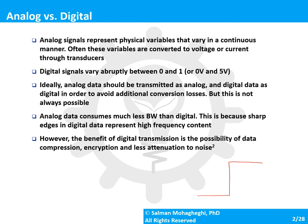In an ideal world, you would want to transmit analog signals through analog transmission systems and digital signals through digital transmission systems, because every time you convert a signal from one form to another there will be losses. In practice, however, this is not possible, so there are different situations where it is better to transmit a signal as analog and certain situations where it is better to transmit as digital.